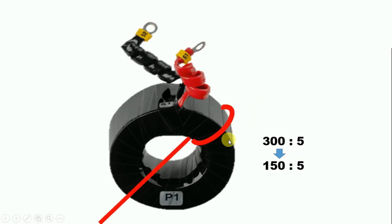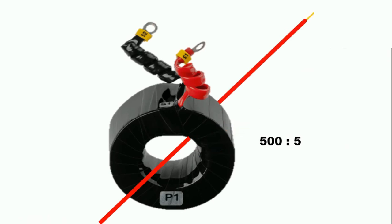Now if we make one more turn, the ratio will reduce again to 75 by 5.